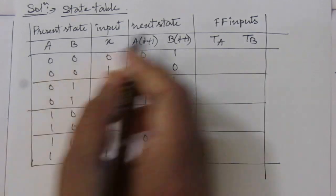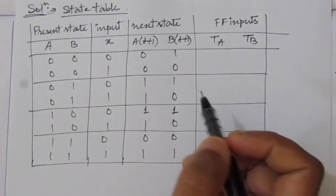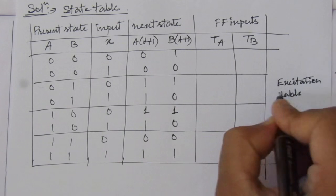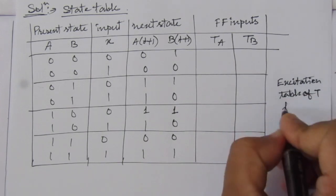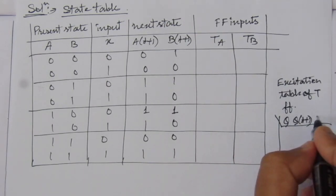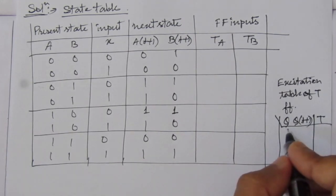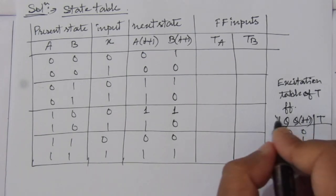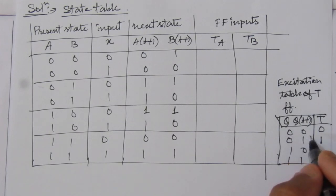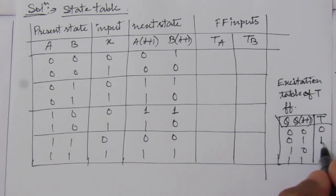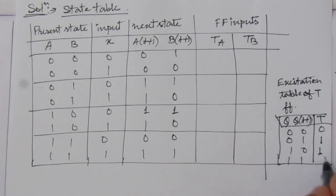Now we have to find out TA and TB using the excitation table of the T flip-flop. In the excitation table of T flip-flop, we have present state Q(T) and next state Q(T+1), and we find the respective input T. For present state 0 and next state 0, T input is 0. For 0 to 1, T input is 1. For 1 to 0, T input is 1. For 1 to 1, T input is 0.